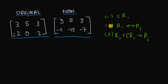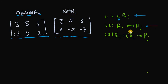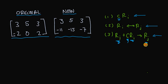Our three elementary row operations are as follows. Rule one: we can take some row and multiply it by some nonzero constant c. Rule two: we can interchange two rows. Rule three: we can take one row, multiply it by a nonzero constant c, and add it to some other row to obtain a new row.